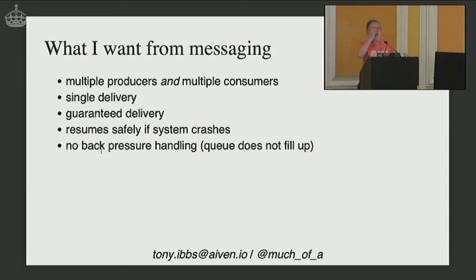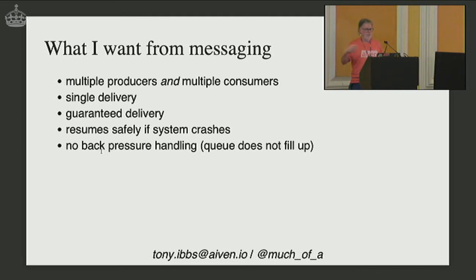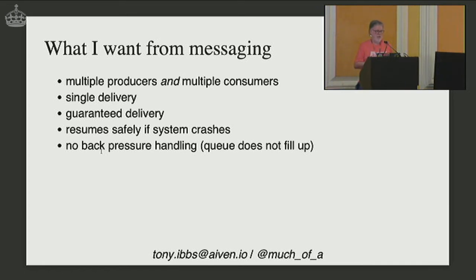What I want from messaging: multiple producers and consumers, single delivery — if I send a message, I want it to arrive once, guaranteed. I want to know that if some component crashes, it will all start up again and carry on from where it left off. And I don't want back-pressure handling — classic queuing systems like RabbitMQ make you wait until the consumer has consumed something out of the queue before there's room to add more. That's a pain.